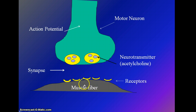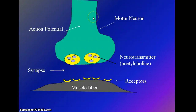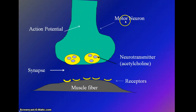Remember that in order for a skeletal muscle fiber to contract, it must get a signal from the nervous system. The part of the nervous system it gets a signal from is called a motor neuron.